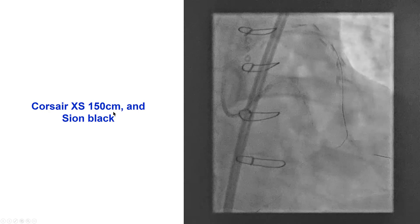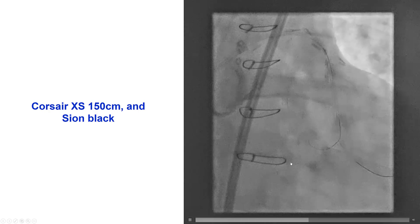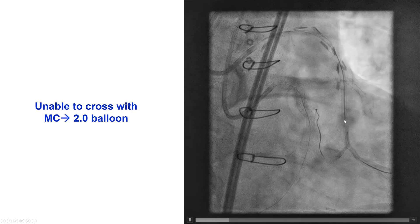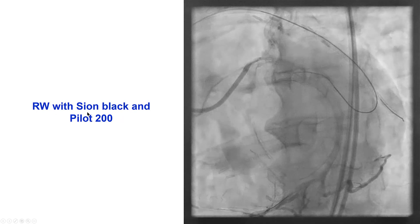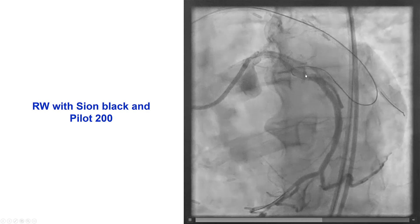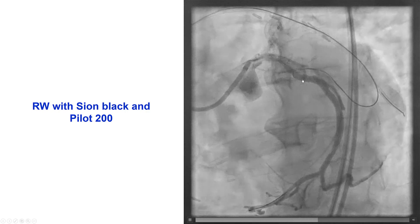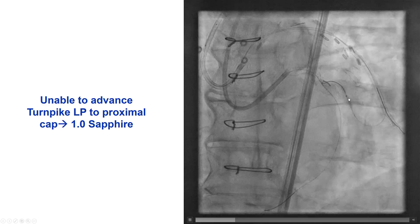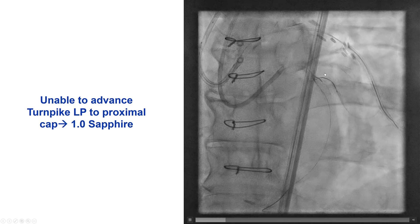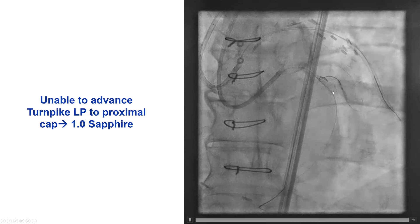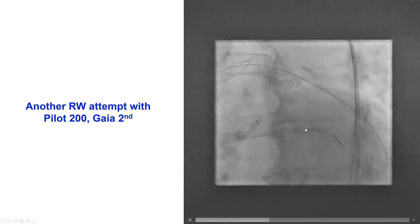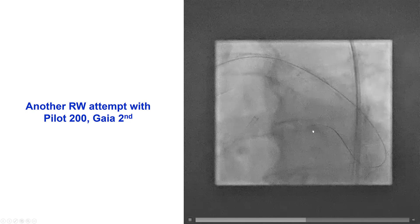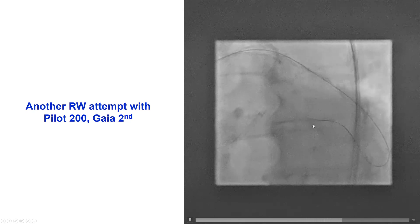We used a Corsair XS 150 cm microcatheter and a Confianza wire that easily went retrograde. However, the microcatheter could not cross, so we had to balloon across the distal anastomosis to advance the retrograde microcatheter. We tried advancing a Confianza and a PILOT200 retrograde, but they seemed to go in the extraplaque space — we see the wire wrapping around the circumflex stent. We had difficulty getting the retrograde microcatheter closer to the cap, and to overcome this we did balloon angioplasty with a Sapphire 1.0 mm balloon advanced retrograde.